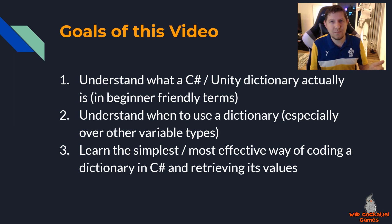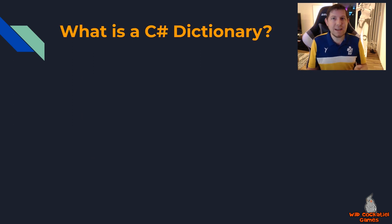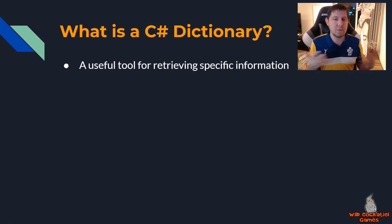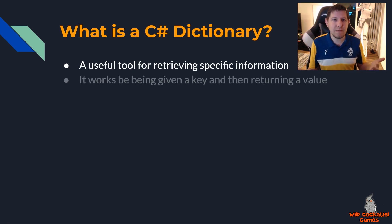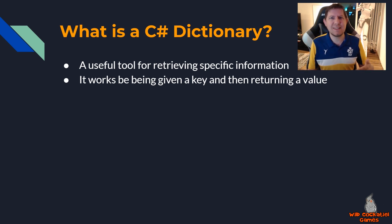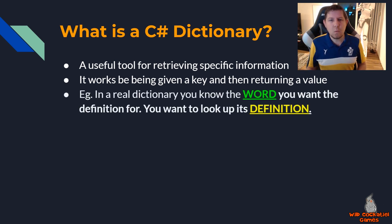Getting started - what is a C# dictionary exactly? The most simple way of explaining it is it's a useful tool for receiving specific information. It works by being given a key and then it returns a value for you. But what exactly does that mean? Even that doesn't sound too beginner-friendly, so let's look at a real dictionary as an example.